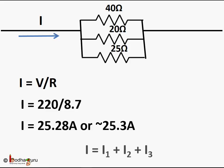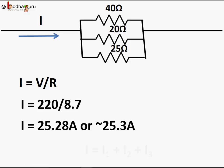So I is equal to I1 plus I2 plus I3 — this is exactly what we have learned. That's all for now. Bye bye.